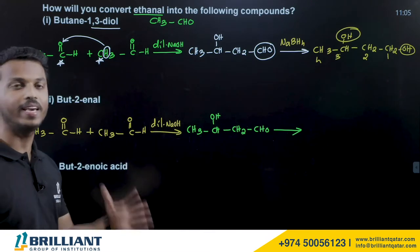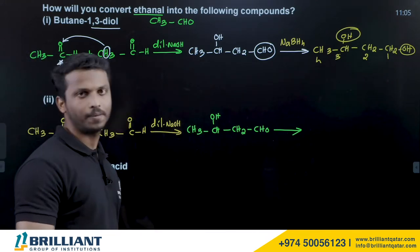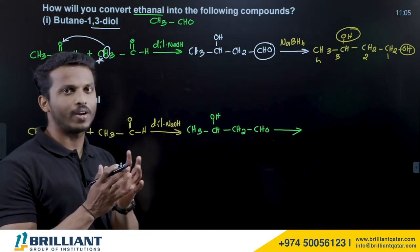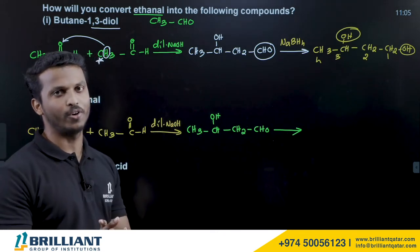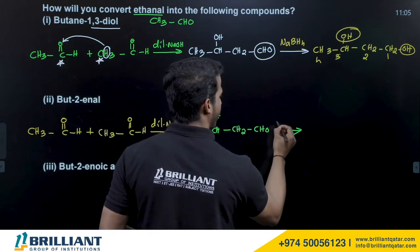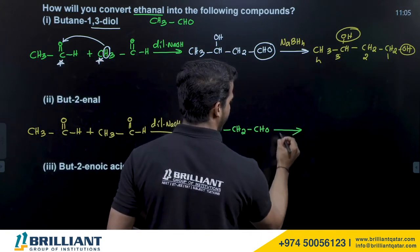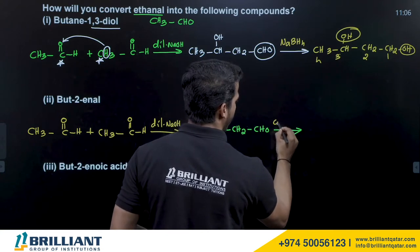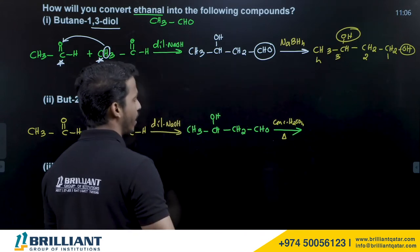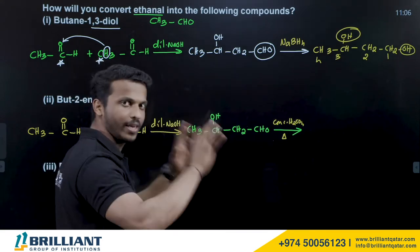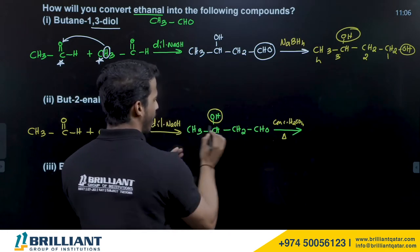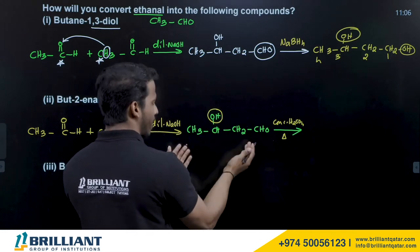The target is but-2-en-1-ol, which contains a double bond — an alkene. Since an alcohol is already present in the intermediate, when it undergoes dehydration it will give an alkene. So let us heat with concentrated H2SO4.